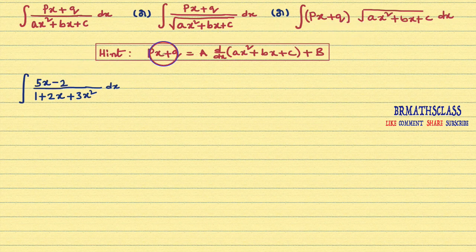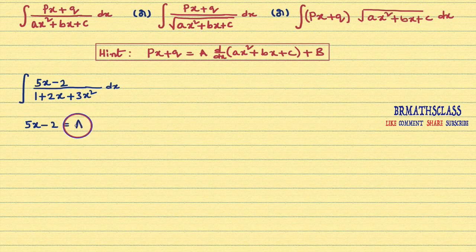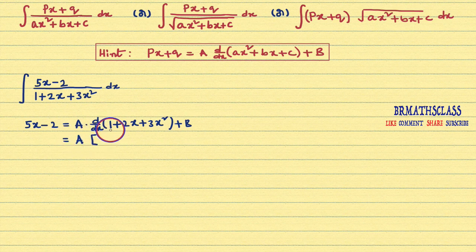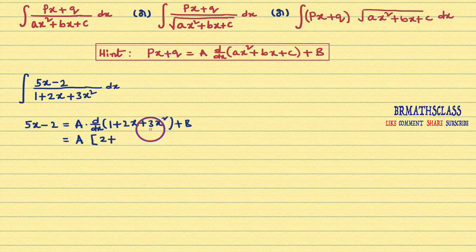First, we will write px plus q like this. Here the expression px plus q is 5x minus 2. I will write 5x minus 2 as a into d/dx of ax² plus bx plus c. That means the expression 1 plus 2x plus 3x², plus b. Now I will differentiate this expression. We get a into: derivative of 1 is 0, plus derivative of 2x is 2, plus derivative of 3x² — 3 is constant, derivative of x² is 2x, so 3 into 2x is 6x — plus b.